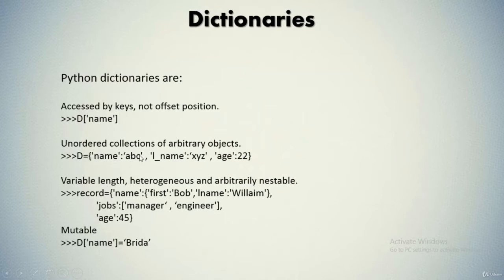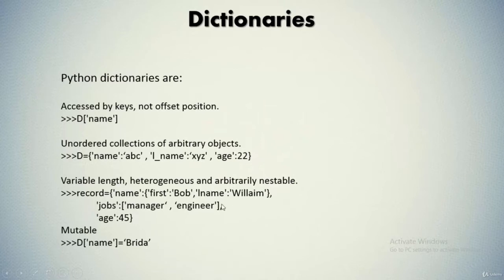A dictionary is an unordered collection of arbitrary objects containing key-value pairs. It has variable length, is heterogeneous and arbitrarily nestable, which means you can nest a dictionary inside another dictionary. For instance, in a dictionary named 'record', we can have a nested dictionary — the 'name' key can contain three different key-value pairs, and the 'job' key can contain two different key-value pairs.